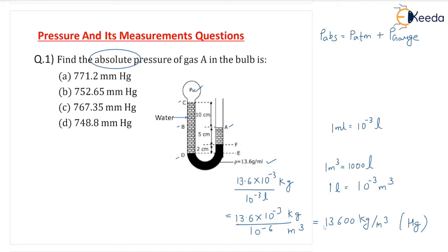Now, we have to find the absolute pressure, and the formula is: absolute pressure equals atmospheric pressure plus gauge pressure. The right side of the manometer is open to atmosphere, so up to that point the pressure is atmospheric pressure P_atm, which equals 101325 Newton per meter square.